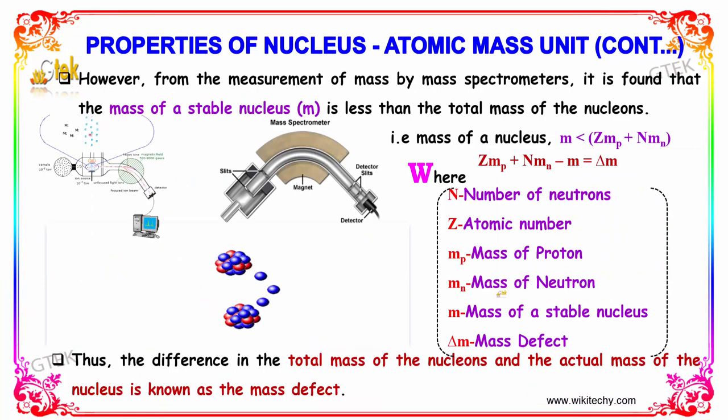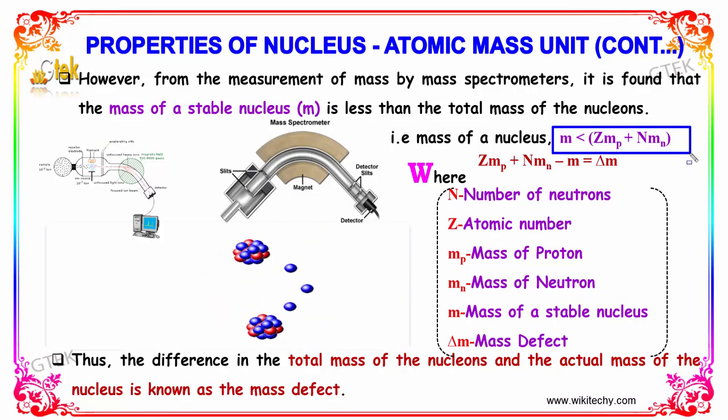Further on the atomic mass unit, from the experiment of mass by mass spectrometer, it is found that the mass of a stable nucleus m is less than the total mass of the nucleons. So zmp plus nm minus m is equal to delta m, where delta m is the mass defect.